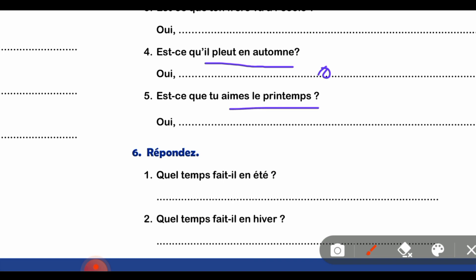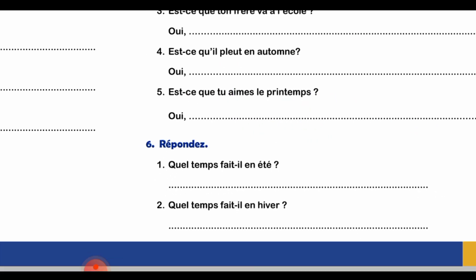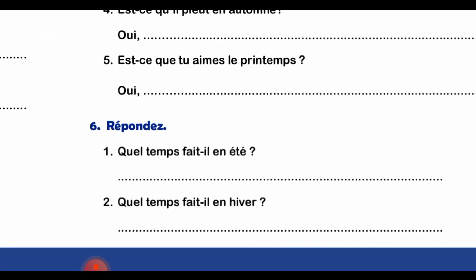Part 5 - 'Est-ce que tu aimes le printemps' means do you like the spring season. Answer: 'Oui, j'aime le printemps.' Note that the apostrophe here is small - it is an annotation. So this is how we answer question number 5.